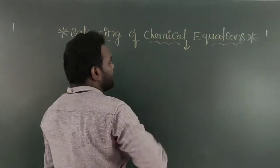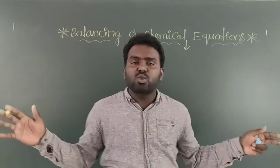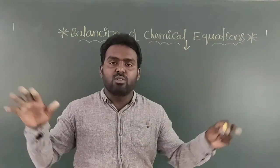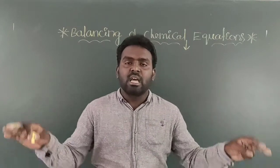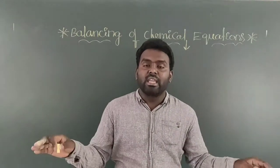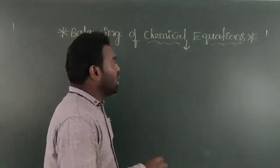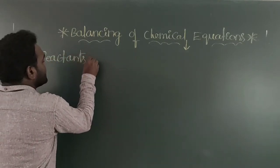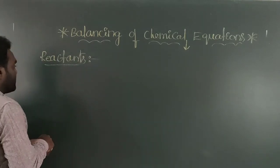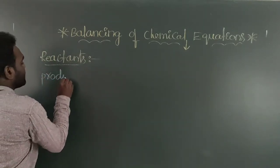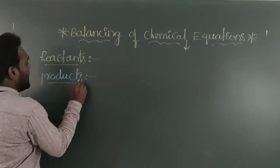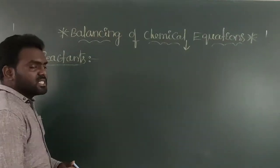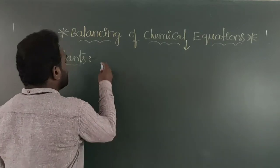In our surroundings, so many chemical reactions are going on. All chemical reactions contain two important parts: one is called reactants and the second one is called products. First I am going to discuss the reactants, and after that I will explain the products. The definition of reactants: the substances which are initially participating in the reaction are all called as reactants.